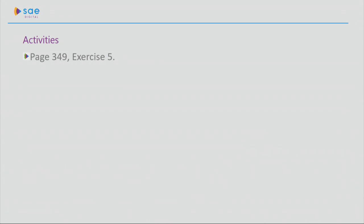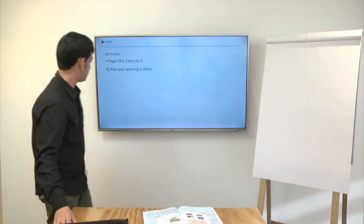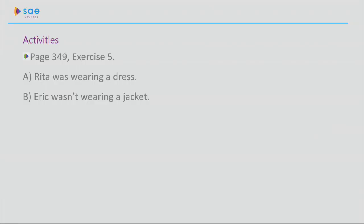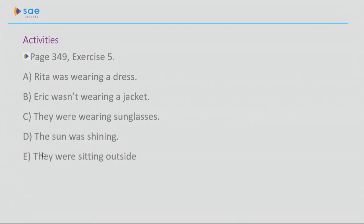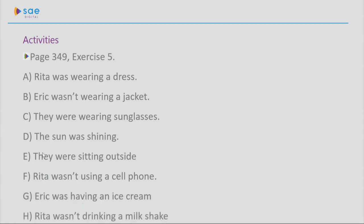So, sentence A. Rita wear a dress. You can say that Rita was wearing a dress. A letter B. Eric wear a jacket. Eric wasn't wearing a jacket. Letters C. They wear sunglasses. They were wearing sunglasses. Letters D. The sun shine. The sun was shining. Letters E. They sit outside. They were sitting outside. Em português a gente não fala isso, né? Eles estavam sentando. But in English, it's possible. Letters F. Rita use a cell phone. Rita wasn't using a cell phone. Letters G. Eric have ice cream. Eric was having ice cream. And, finally, letter H. Rita drink a milkshake. Rita wasn't drinking a milkshake. Parece um chá, um suco, um refrigerante, não sei.